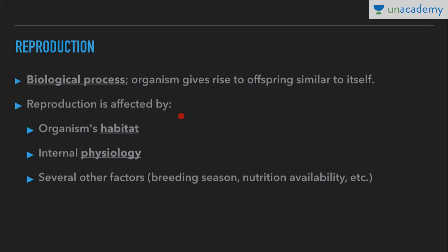There are various factors which affect reproduction. Some of these are the organism's habitat — it is very important in which habitat the organism is living — and its internal physiology. For reproduction, it is required that the organism should be mature, with a proper balance of hormones. Several other factors include breeding season, nutrition, availability, and so on.